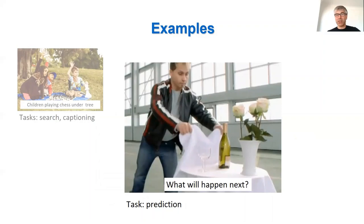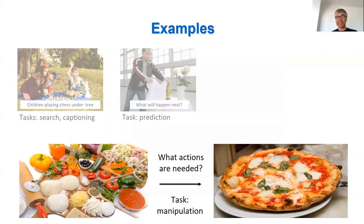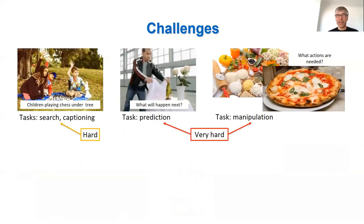But this is not the only task we may think about. Here's another dynamic scene — we all understand what may and will happen if the guy is going to pull the table close. How can our methods currently handle this? This is a task of prediction, which can be very important for autonomous driving or other scenarios. Here is another example of an unseen dynamic scene, where the task would be manipulation: what kind of actions are required to bring the state on the left to the state on the right?